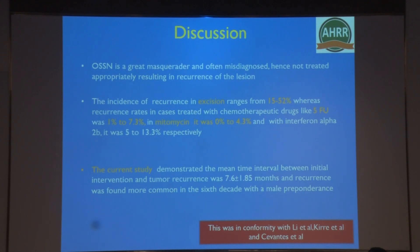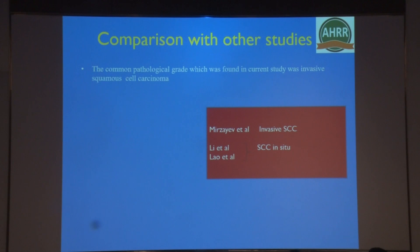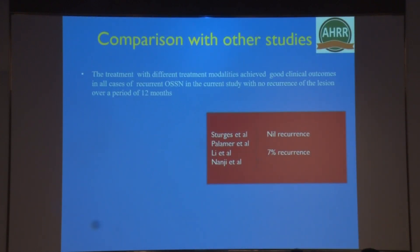The current study demonstrated that the mean interval between the initial intervention and tumor recurrence was seven months, which is in conformity with Kyra et al., who confirmed similar findings. The main cause of recurrence in the current study was incorrect diagnosis and patients not being followed up at the initial center. The common pathological grade was invasive type, concordant with Mr. et al., while Lee and Lao et al. reported SCC type. Treatment with different modalities achieved good outcomes in all cases with no sign of recurrence over 12 months, consistent with Sturge and Palmer et al.